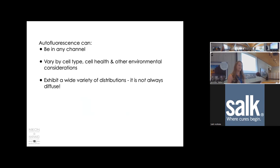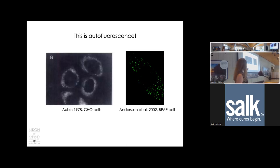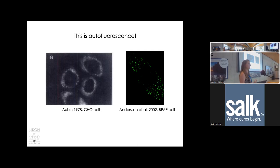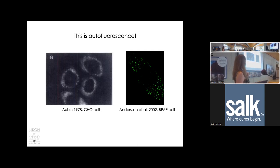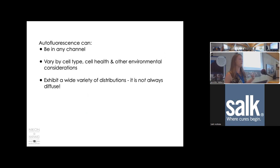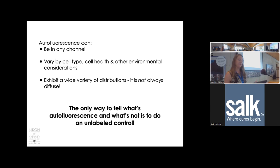Autofluorescence can occur in any channel, varies by cell health, cell type, and environment, and can exhibit a wide variety of distributions—sometimes looking like a specific, meaningful signal even though no fluorophore has been added. The only way to distinguish autofluorescence from real signal is to include an unlabeled control: a sample treated exactly the same as your experiment but without any added fluorophore.